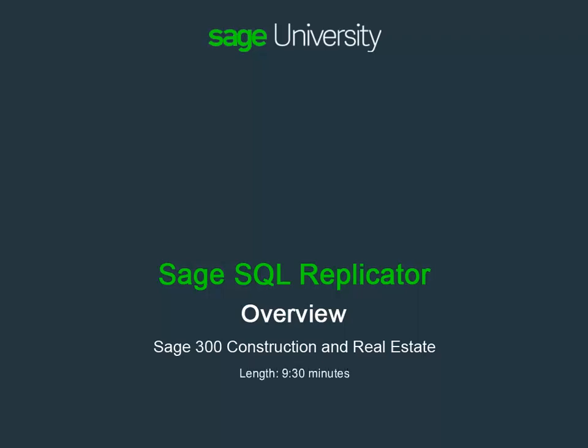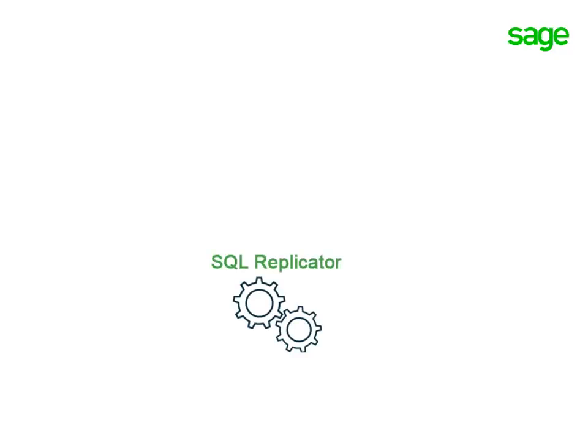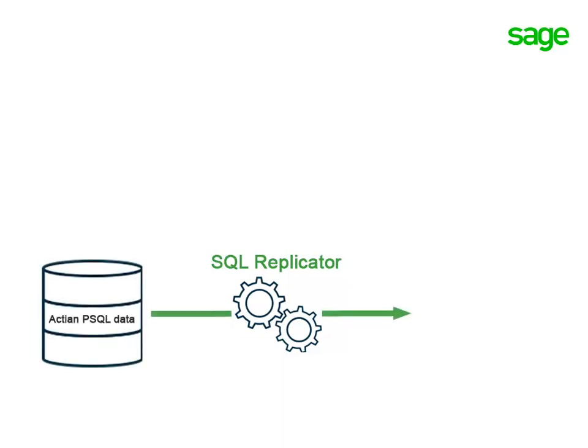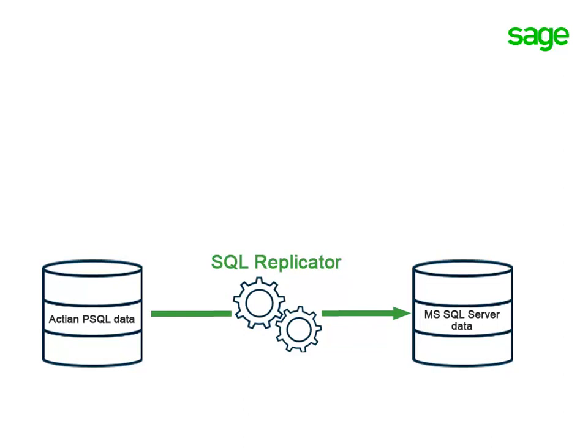What is Sage SQL Replicator and how does it benefit you? This video gives you an overview of this tool and will examine how to install, configure, and use SQL Replicator. Sage SQL Replicator is the tool that copies your Sage 300 Construction and Real Estate data from the Pervasive data management system into a SQL Server database. The replicated data includes your purchasing, inventory, and service management data if you use those products.